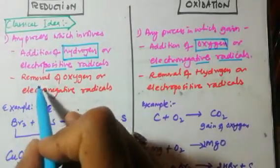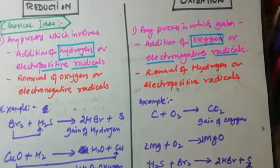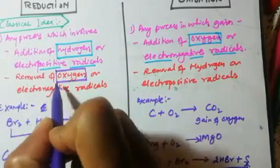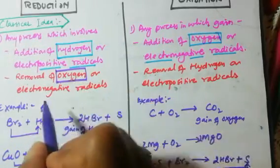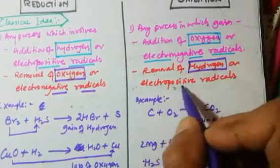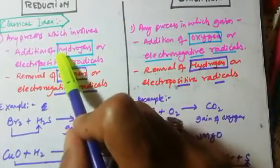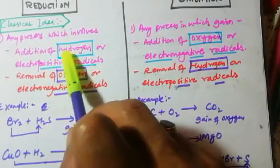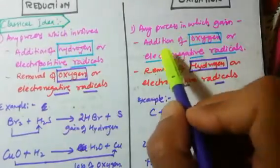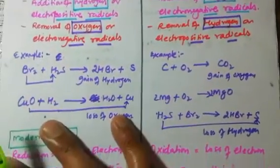The second difference: reduction also involves removal of oxygen or electronegative radicals, while oxidation involves removal of hydrogen or electropositive radicals. So in general, addition of hydrogen and removal of oxygen is called reduction, and addition of oxygen and removal of hydrogen is called oxidation.